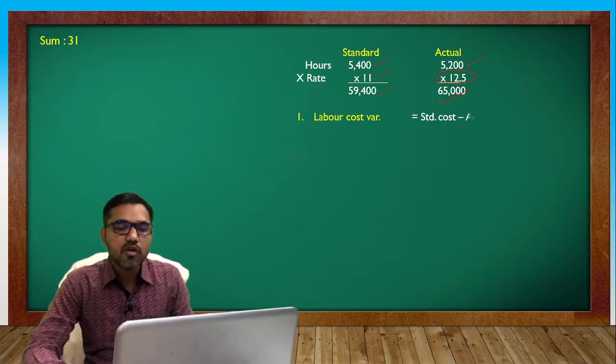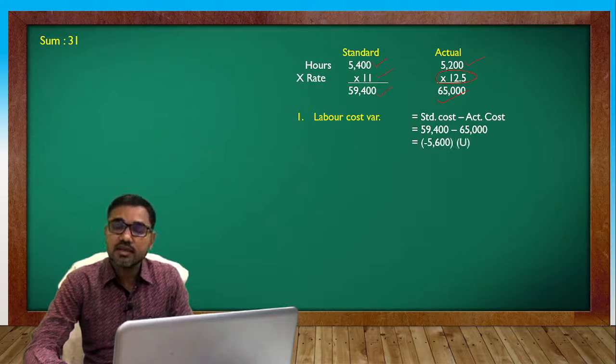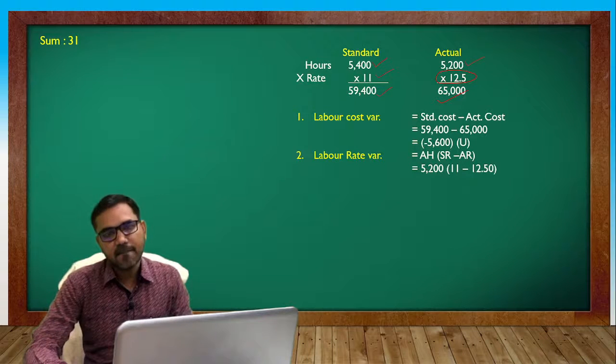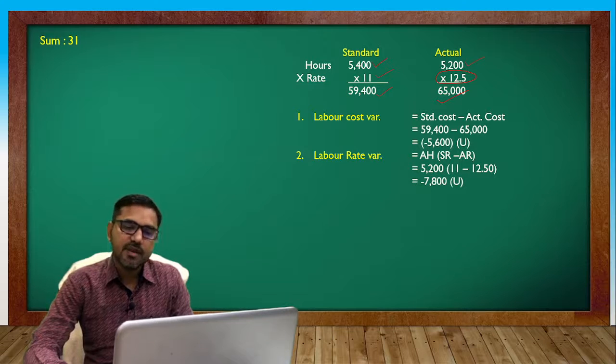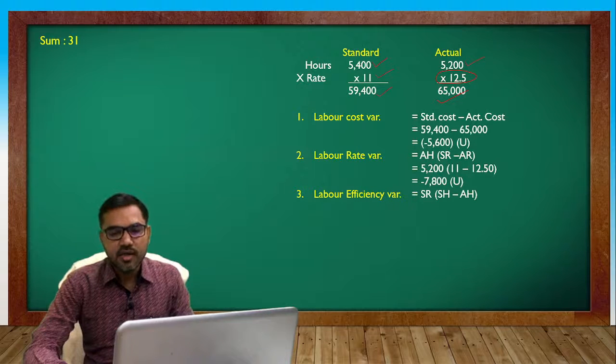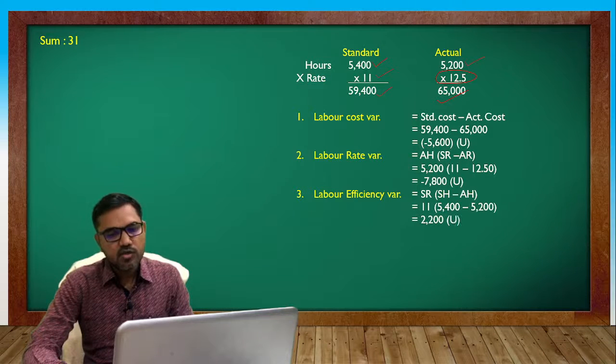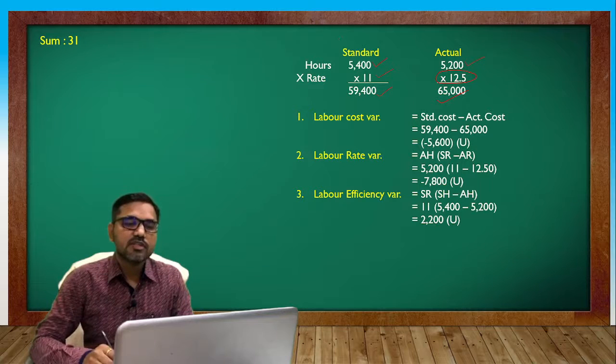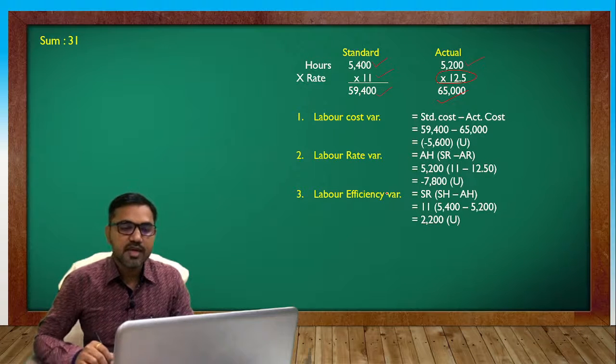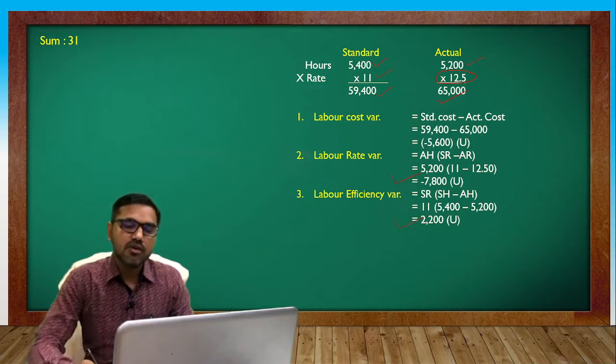Labor cost: standard cost minus actual cost, difference is minus 5600 unfavorable. Rate formula: actual hours into SR minus AR, so rate difference is minus 7800 unfavorable. And labor efficiency SR into SH minus AH, okay 2200 favorable. So you can check - if we talk about hours, actual hours are lower than standard, and rate is higher, so rate variance is minus and efficiency variance is plus. When we net them off, we get the loss which comes in cost at minus 5600.